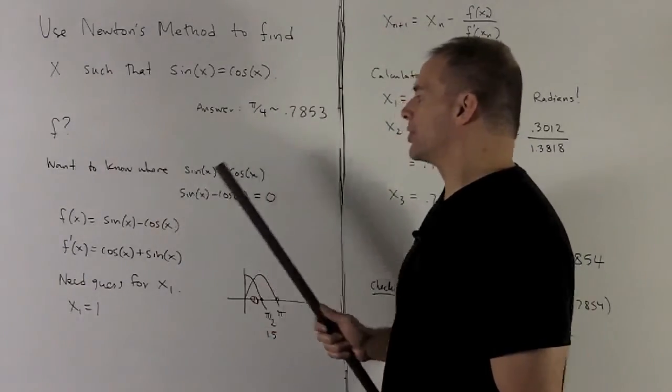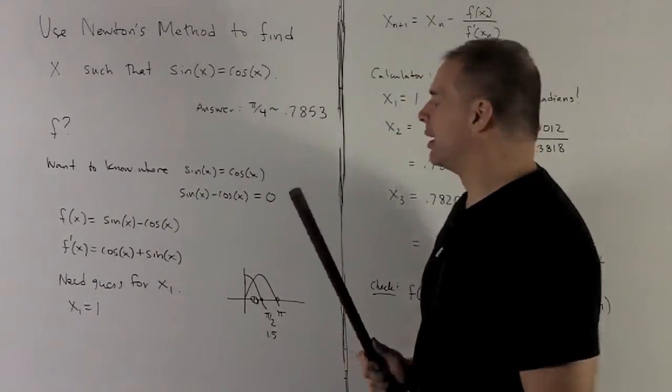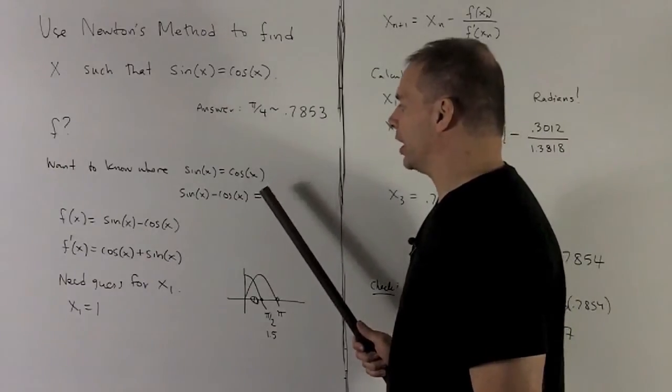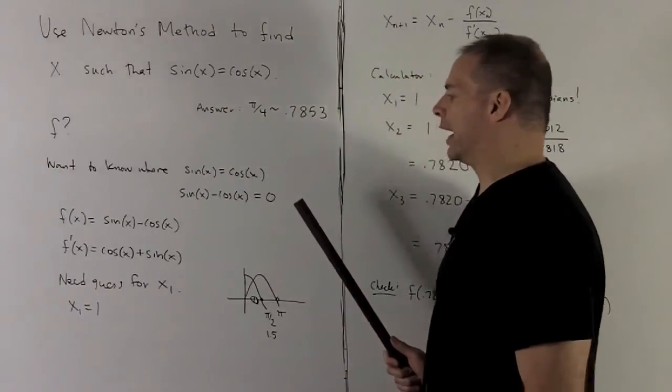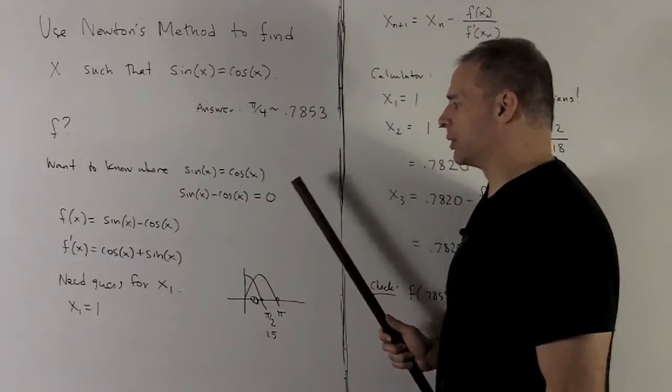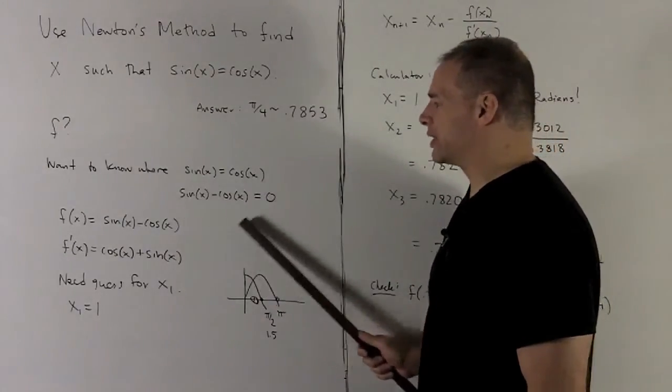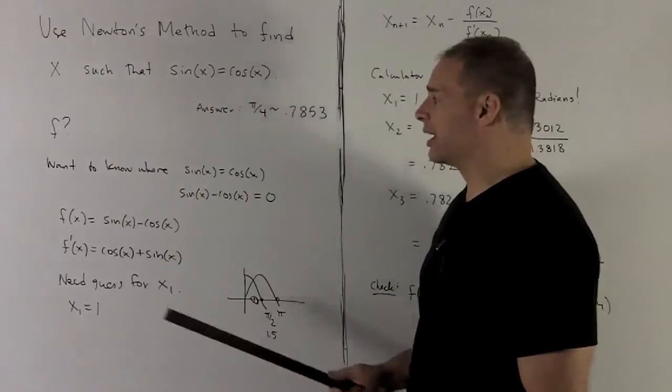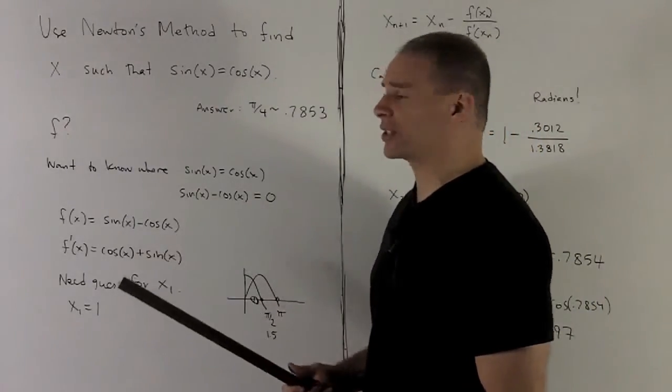So we want to know where sine of x is equal to cosine x. If I want to get 0 into the picture I can do that by just pushing cosine to the other side of the equation. And then I'm looking at where sine of x minus cosine x equal to 0. So I should just call this thing here my f of x. f of x is going to be sine x minus cosine x.